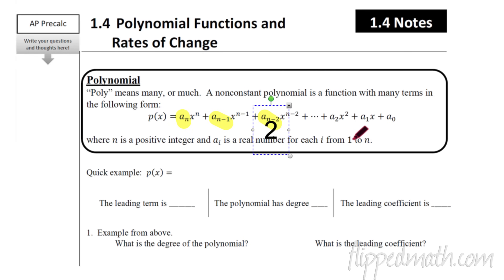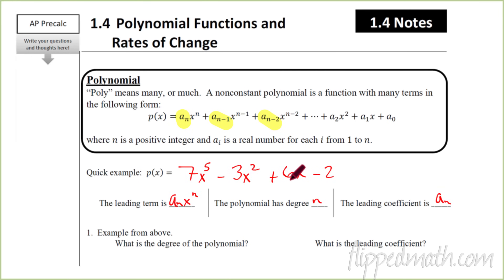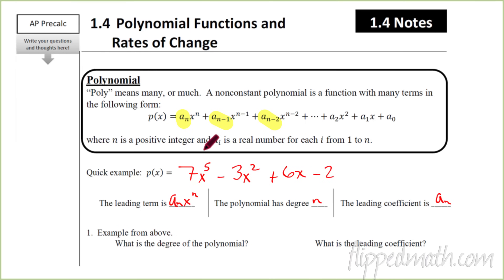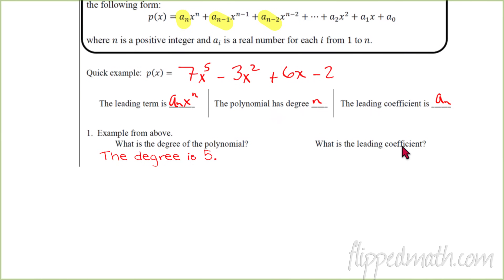Here's a good example: 7x to the fifth minus 3x squared plus 6x minus two. The exponents on each term decrease in order — we put the highest exponent term in front and the constant at the end. The leading term is the first term, which in this case is 7x to the fifth. The polynomial has degree n, where n is the exponent on the leading term, so the degree here is 5. The leading coefficient is just the number in front of x, which in this case is 7.